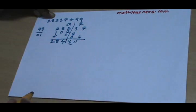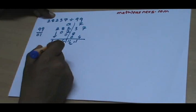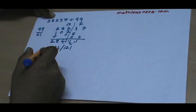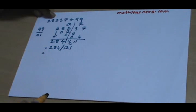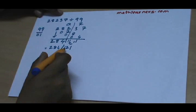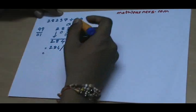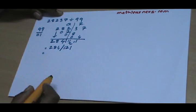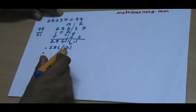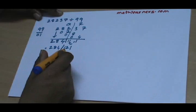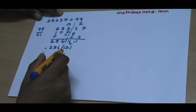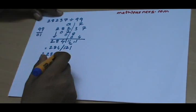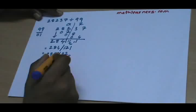The 1 is carry-forwarded, so this becomes 284 / 121. As we had seen in a previous video, we can never have a remainder greater than or equal to the divisor, so we need to divide this remainder by 99. When we divide 121 by 99, the quotient is 1 and that is added to 284, giving 285. The new remainder is 22. So the answer is quotient 285 and remainder 22.